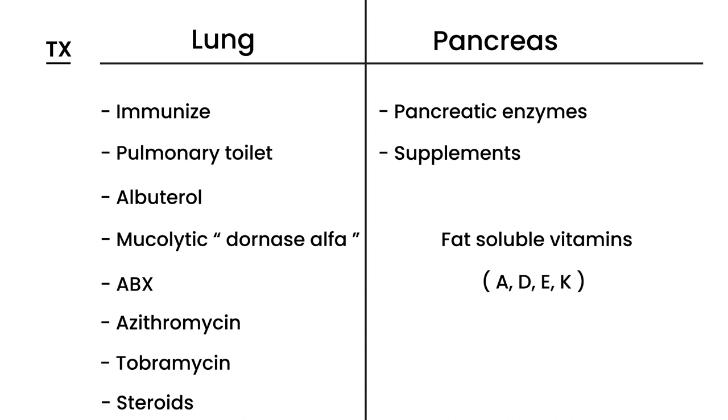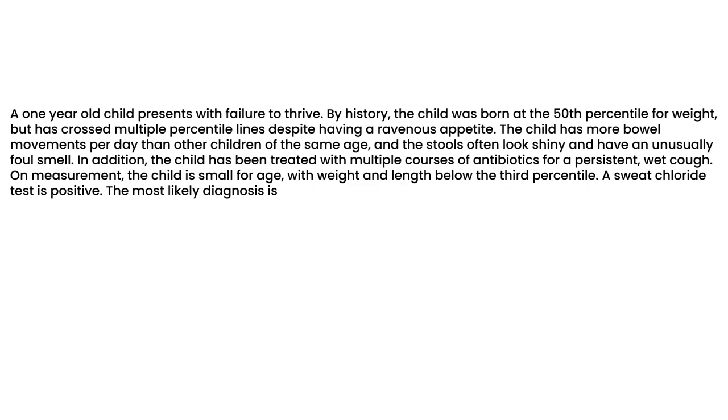Finally, to close off the presentation, I'd like to show a vignette and show you what a licensing exam question about cystic fibrosis looks like. A one-year-old child presents with failure to thrive. So there's that poor growth that we talked about. By history, the child was born at the 50th percentile, but has crossed multiple percentile lines despite having a ravenous appetite. The child has more bowel movements per day than other children of the same age.